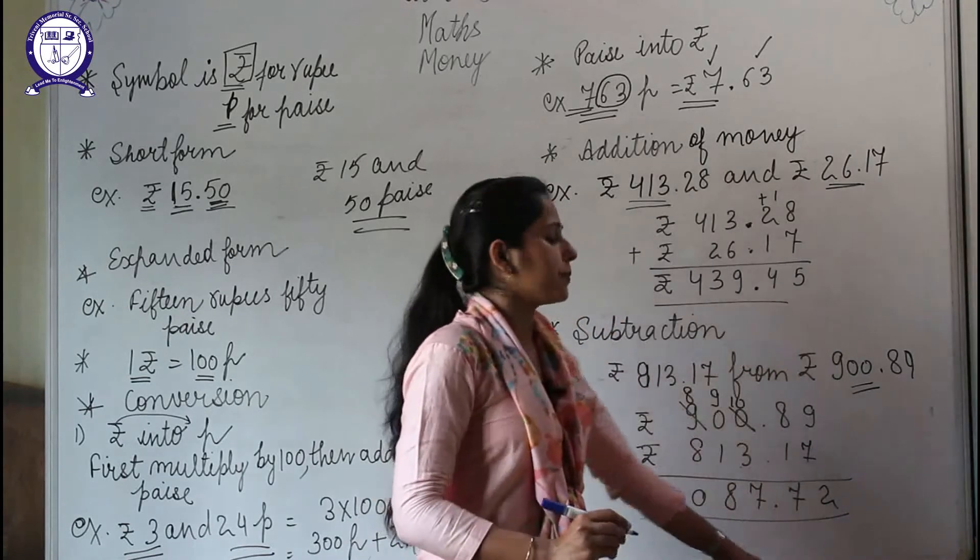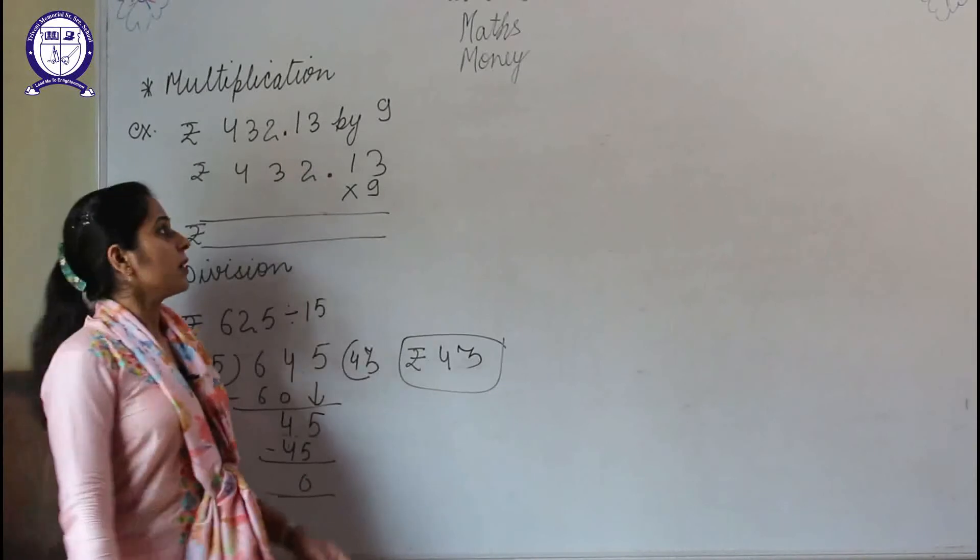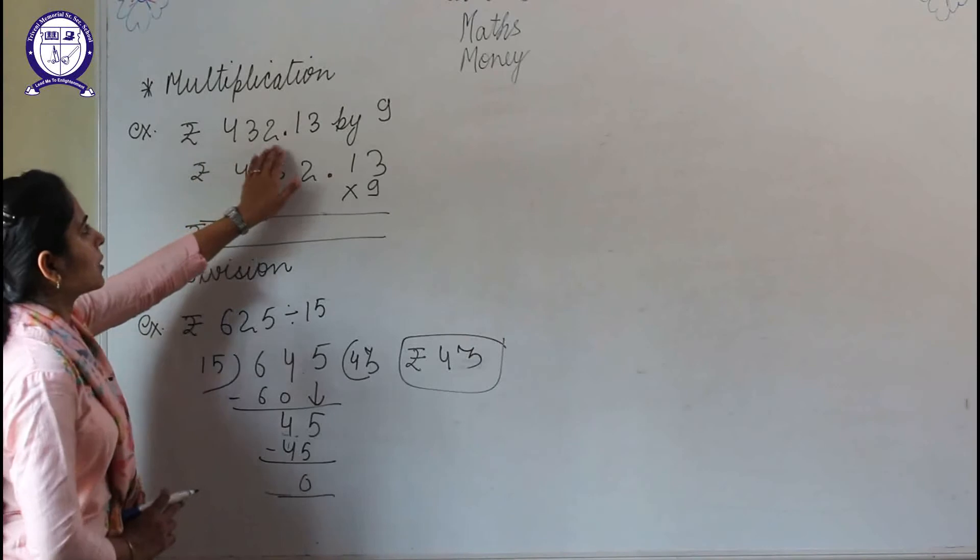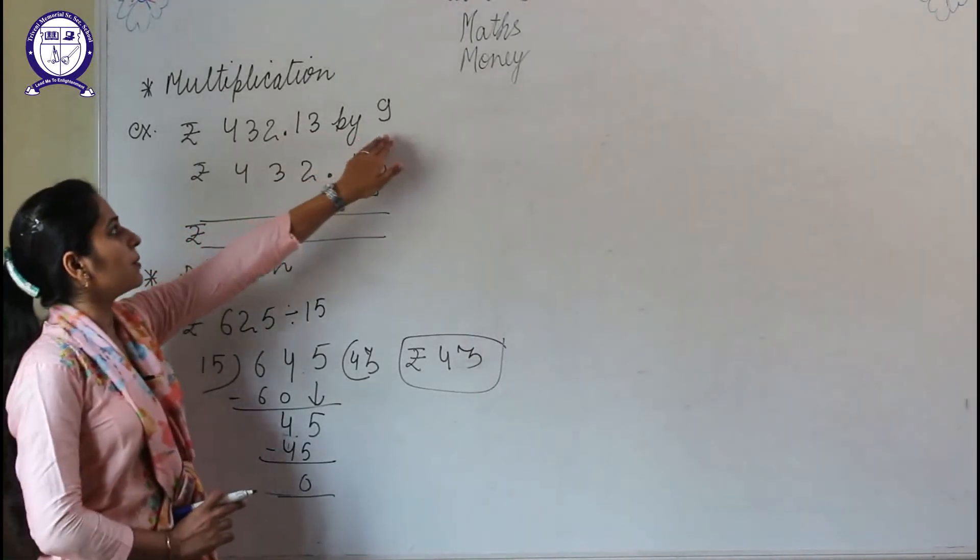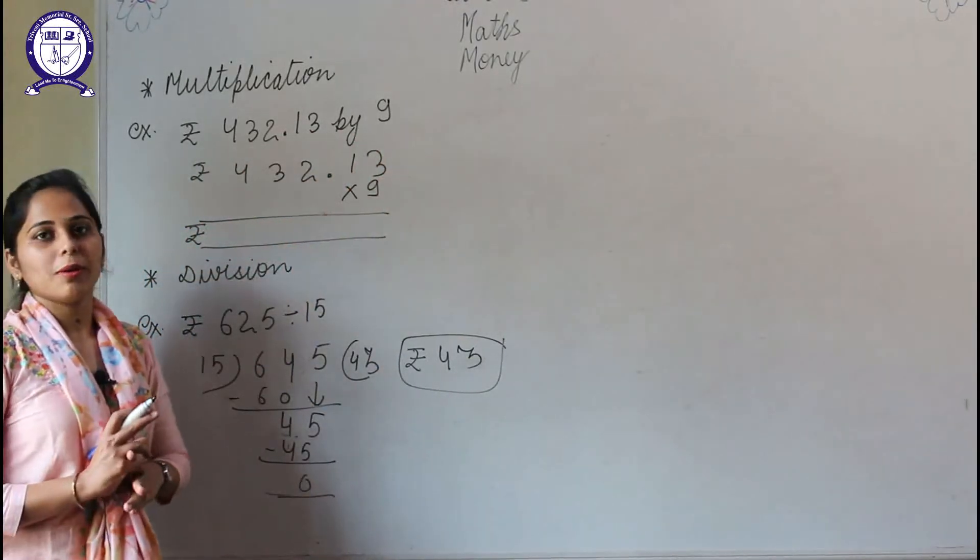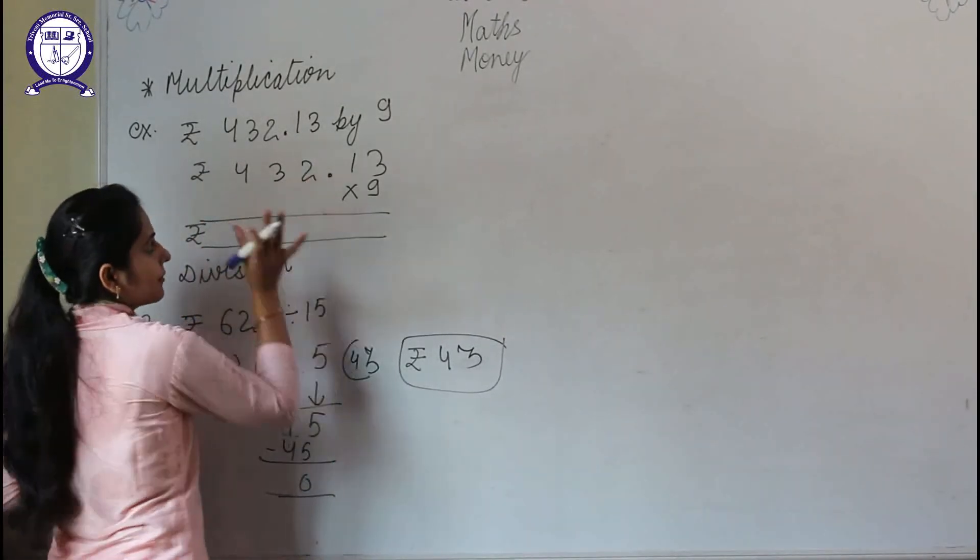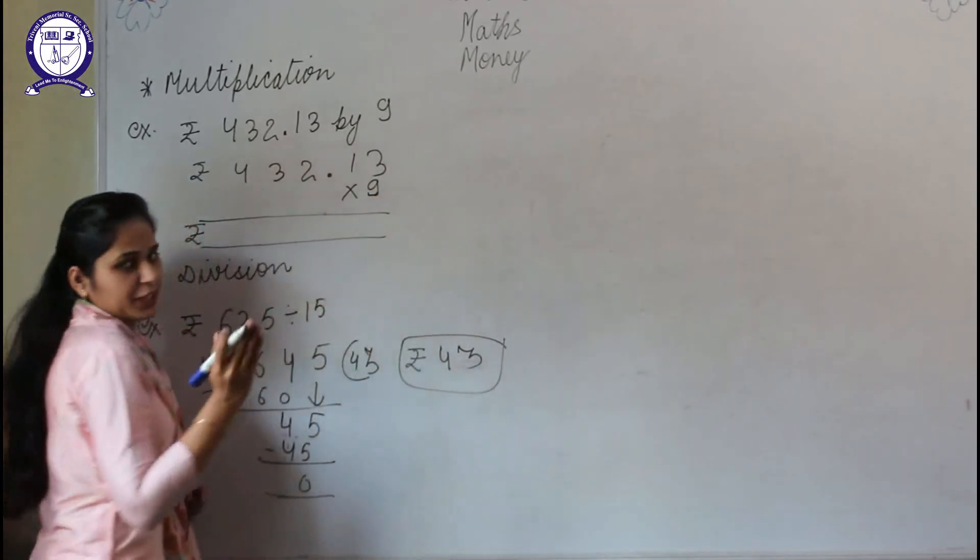will be ₹87.72. Now we'll discuss multiplication and division. Here we have an example of ₹432.13. We need to multiply this by 9. How will we multiply? We'll multiply—first we will arrange the number as I have arranged, and we'll write the number by which we need